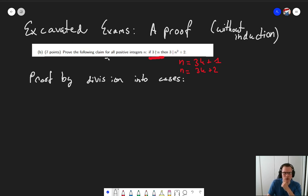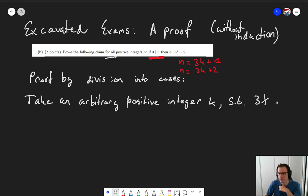So what do we do? We're claiming a for all statement. If we're... Or the claim is a for all statement. If I'm proving that, the first thing I do is I take an arbitrary positive integer k such that the first part of my statement is true. 3 does not divide k.